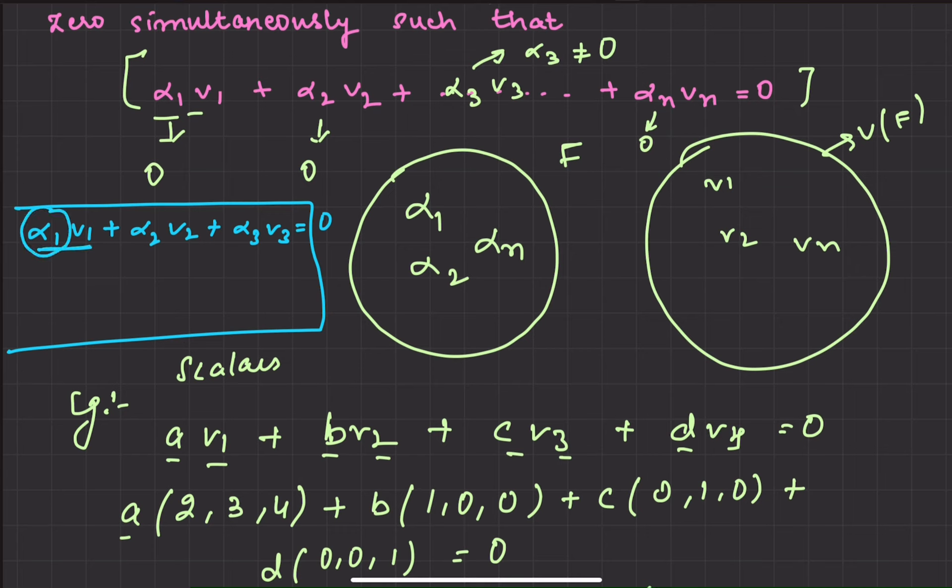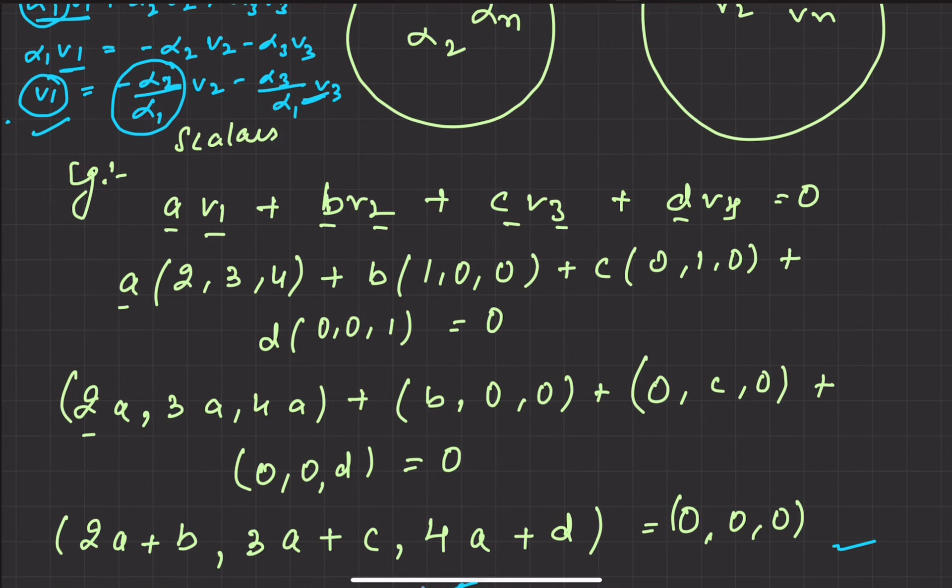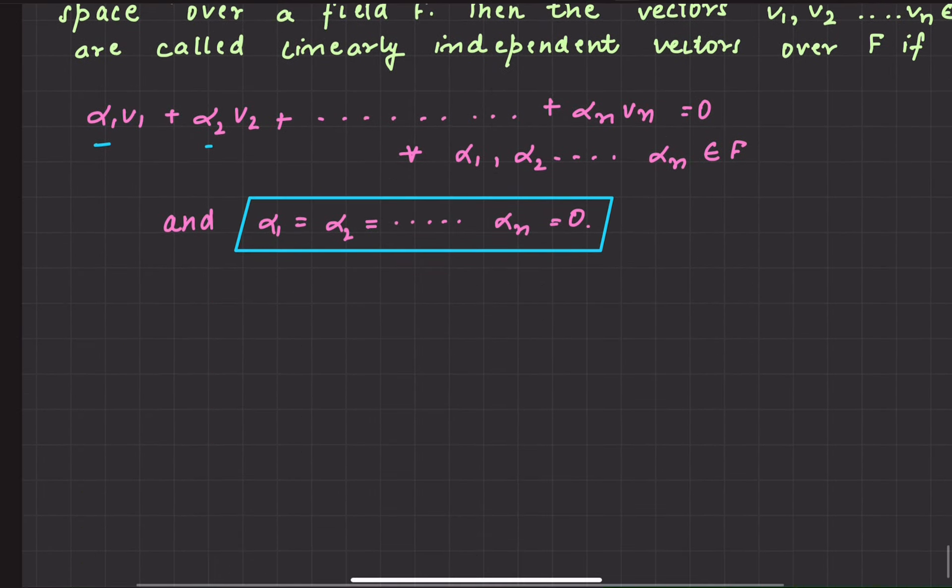Alpha 1 v1 plus alpha 2 v2 plus alpha 3 v3 equal 0. I can write v1 as minus alpha 2 by alpha 1 v2 minus alpha 3 by alpha 1 v3. So the v1 vector depends on the other vectors. Here it's opposite: here we said that all scalars are 0.